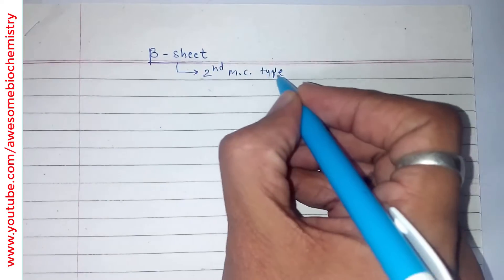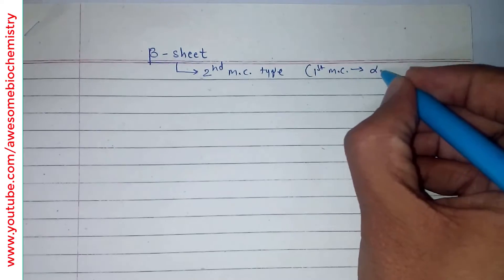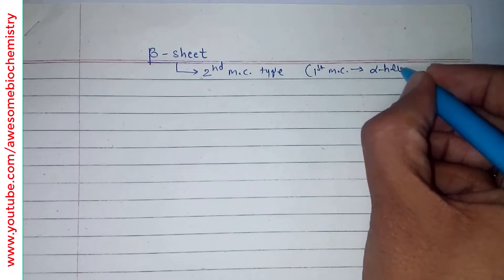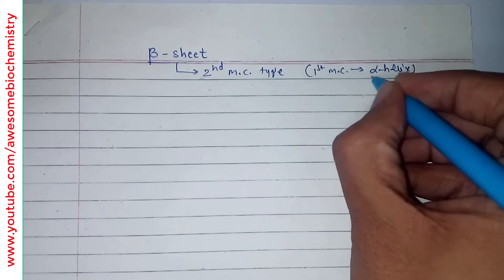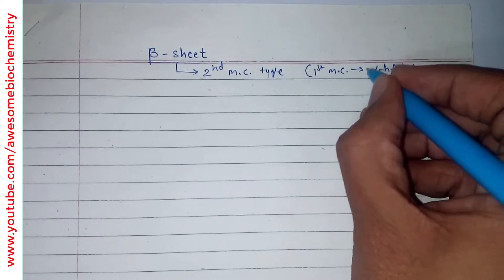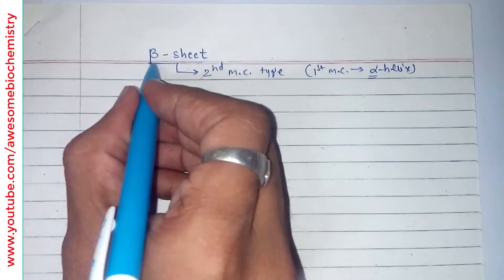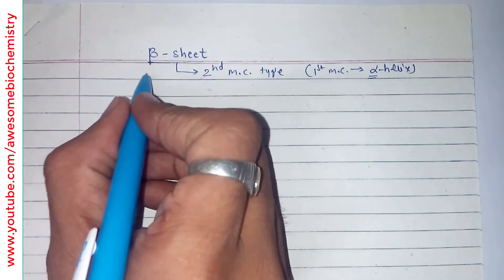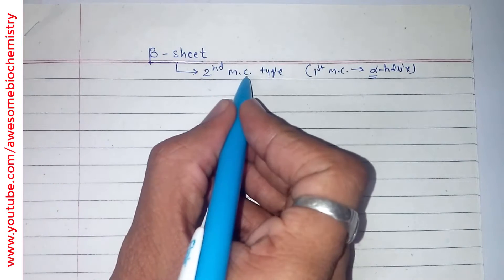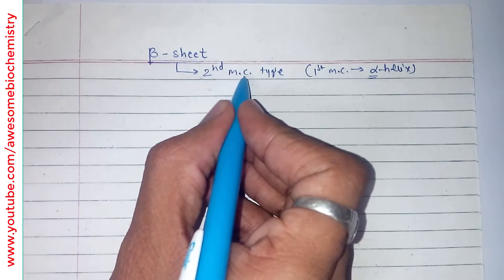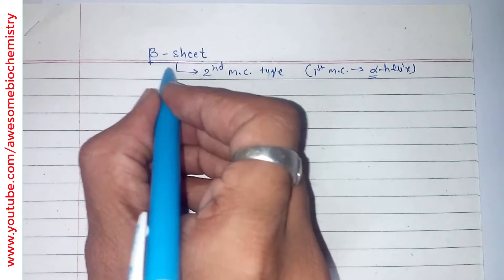Which one is the first most common type? The first most common is the alpha helix. And that is the reason it is called alpha — alpha is the first alphabet, and beta is the second alphabet. So, this is the second most common type.